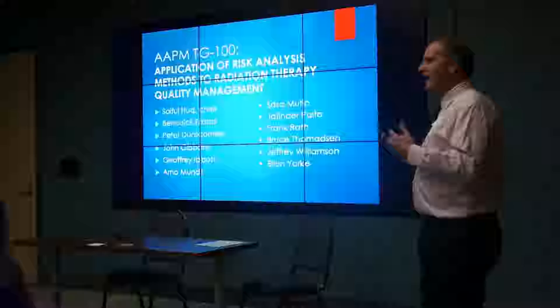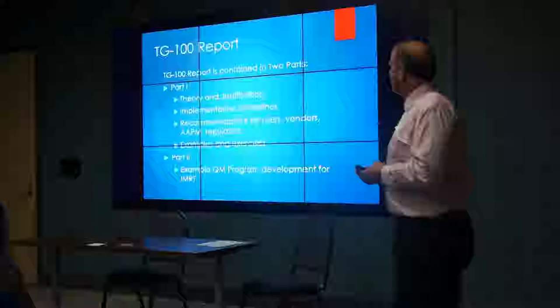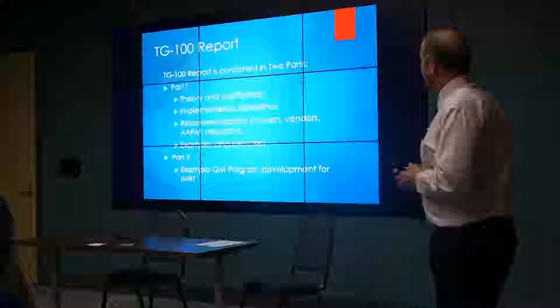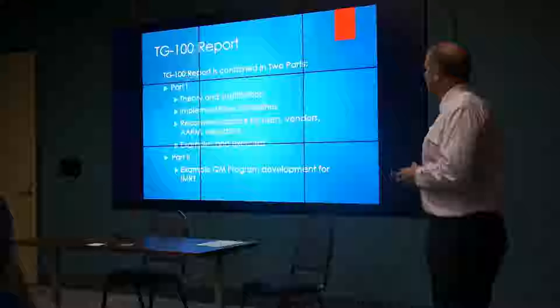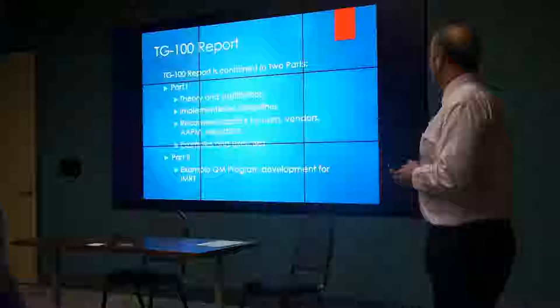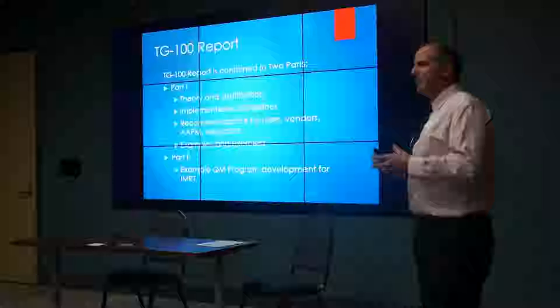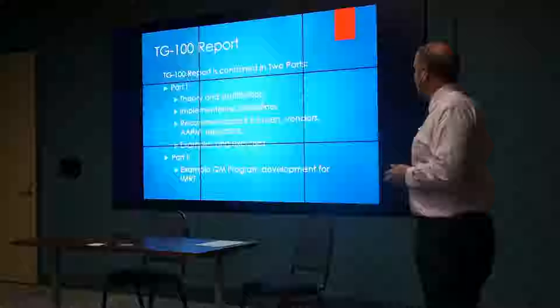Task Group 100 was more of a theoretical framework for how to develop QA procedures—prospective methods. It's really combined in two parts. Part one is what you get when you go to the AAPM website. Part two is mostly the appendices, which are quite large and downloadable under supplementary materials. Part one goes into the theory of justification, implementation guidelines, recommendations for clinical users, vendors, the AAPM, task group authors, and regulators, and it has some examples of exercises.